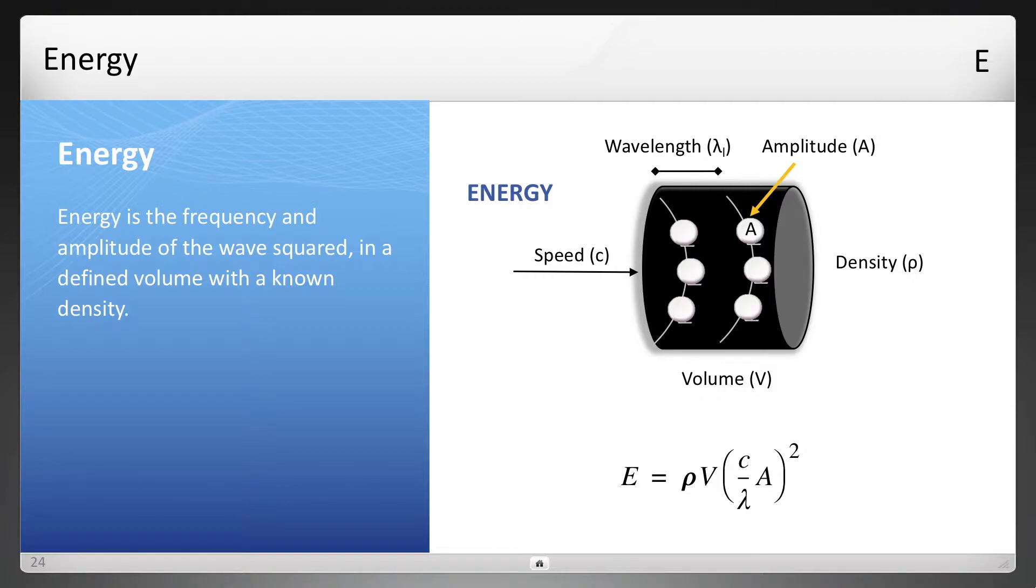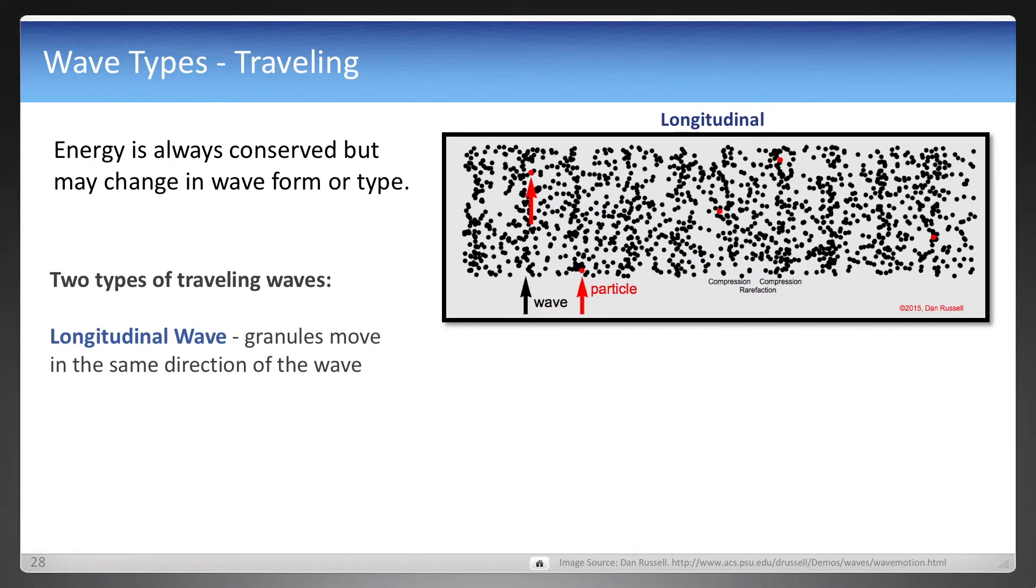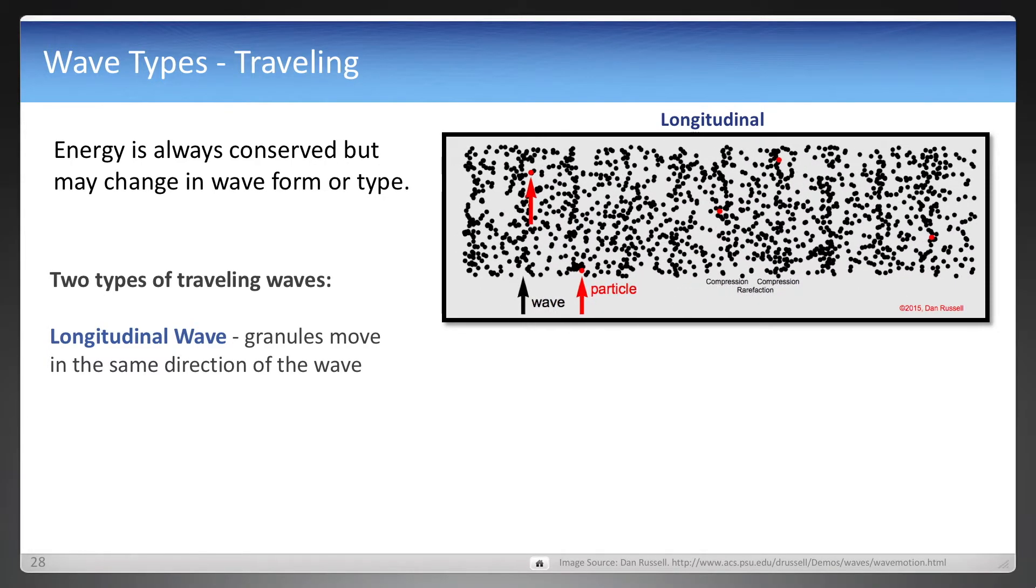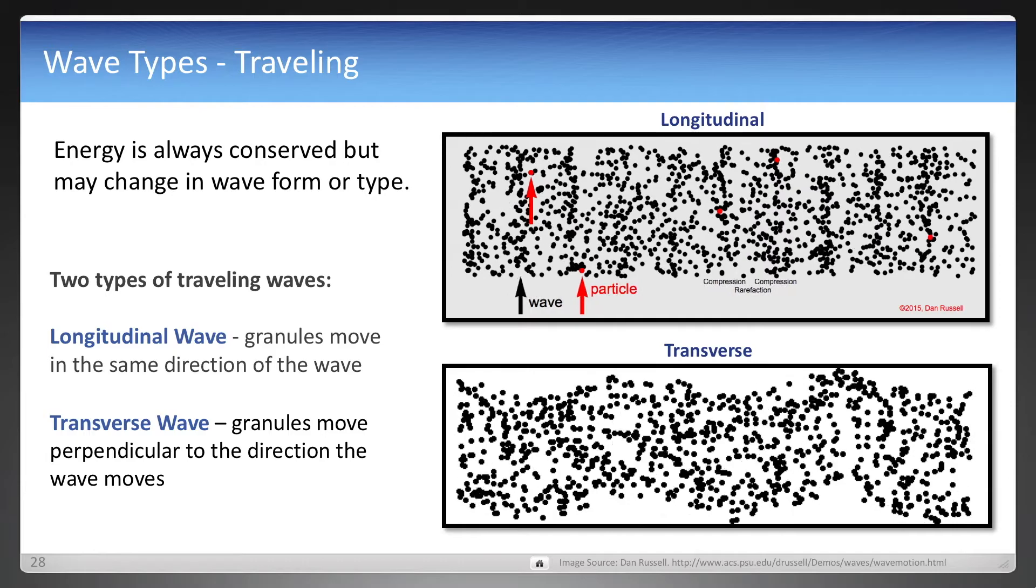But the other thing that's important to remember for energy is the conservation of energy. And so first we'll describe two different wave types. One is longitudinal, where the granules are moving in the same direction as the wave is propagating. And then compare that to a transverse wave, where the granules move perpendicular now to the direction that the wave is propagating.